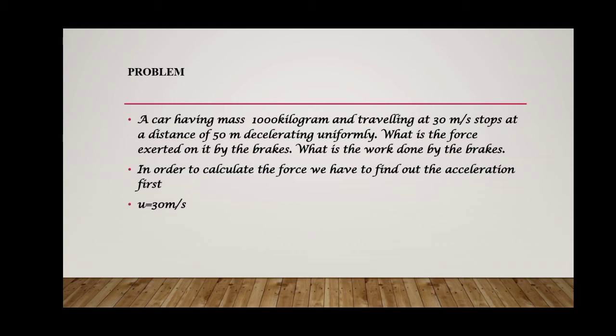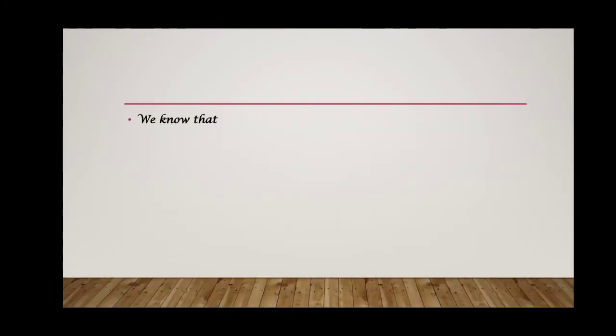For that, we have u = 30 m/s. The final velocity v = 0. We have to find the value of acceleration, a. The distance traveled is 50 m. We know that v² = u² + 2as, the third equation of motion. By substituting the values in the equation, we get 0² = 30² + 2 × a × 50. By rearranging, we get 100a = -900, or a = -900/100. Thus, a = -9 m/s². The value of acceleration is negative, which means it is decelerating.